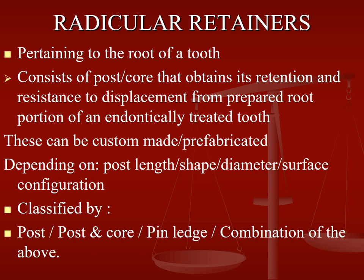Coming to radicular retainers: 'radicular' means pertaining to the root of the tooth. It consists of a post or core that obtains its retention and resistance to displacement from the prepared root portion of an endodontically treated tooth. These can be custom made or prefabricated depending on post length, shape, diameter, or surface configuration. It is classified as post, post and core, pin ledge, or combination of the above. You build a core on top, do tooth preparation, and place a crown on top.